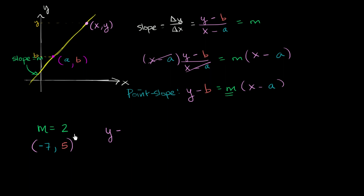an equation that contains this point and has this slope would be y minus b, which is 5, y minus the y-coordinate of the point that this line contains, is equal to my slope times x minus the x-coordinate that this line contains, so x minus negative 7. And just like that, we have written an equation that has a slope of 2 and that contains this point right over here.